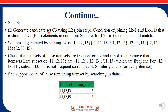Next, we generate candidate set C3 by joining three-item sets. The candidate three-item sets include I1-I2-I3, I1-I2-I5, I1-I3-I5, and I2-I3-I5. We then calculate support counts: I1-I2-I3 has count 2, I1-I2-I5 has count 2, I1-I3-I5 has count 2, and I2-I3-I5 has count 2. Those with support count less than the minimum are not considered further.